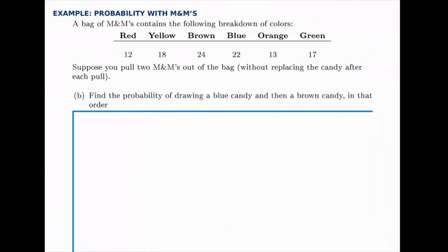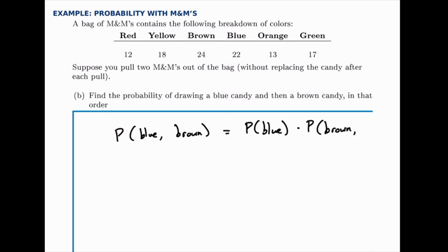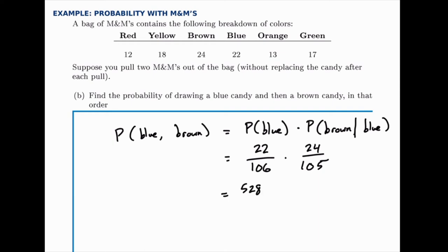For the next part we want to find the probability of first drawing a blue candy and then a brown candy in that order. The probability of drawing blue then brown is the probability of drawing a blue one first, times the conditional probability the second one is brown given the first one was blue. There are 106 total and 22 of them are blue. If the first one drawn is blue, there are 105 total left but all 24 brown ones are still in there. So multiplying these together we get 528 out of 11,130, which is about 0.0474.